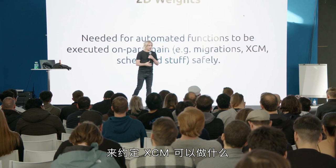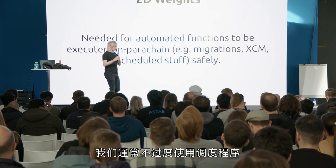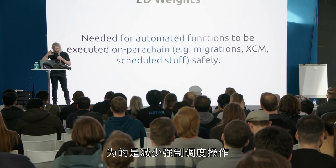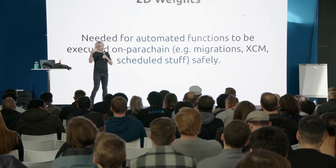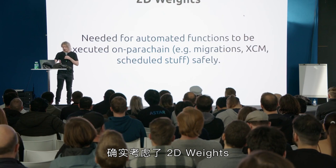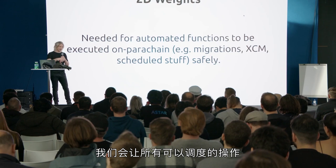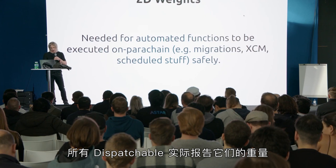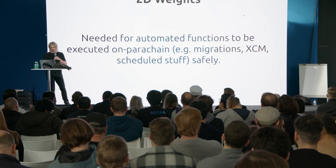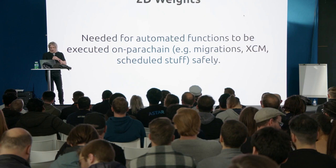The way we're doing it at the moment is basically fudging it. We've got very conservative limits that restrict what XCM can do and restrict the amount of XCMs that can be executed. We're not using the scheduler too much in order to reduce the chance that a mandatorily scheduled operation would bloat the proof of validity block too much. The newer scheduler does take into account 2D weights, and over time, as we move things over to this new two-dimensional weights data type, all the dispatchables will report their weight correctly. It's a fairly big refactor, probably going to be finished in the next month or two, but it is rolling along.